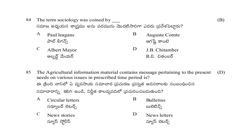The term sociology was coined by: Paul Legans, August Comte, Albert Mayer, or J.B. Chitamba. The answer is B — August Comte, who is also the father of sociology.